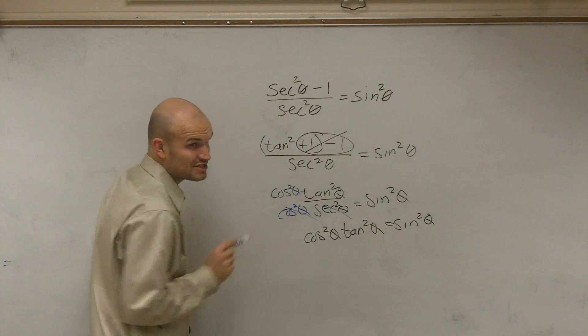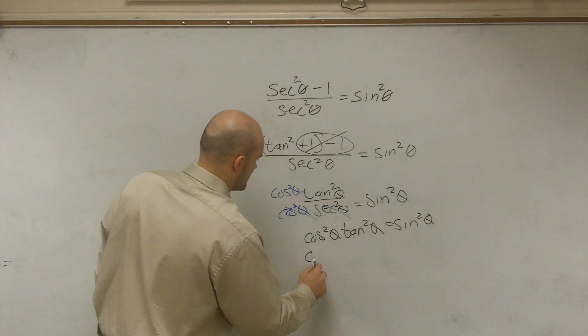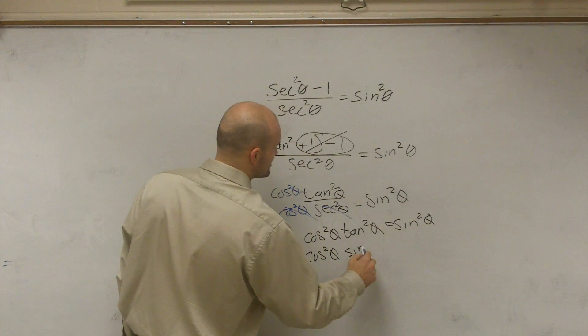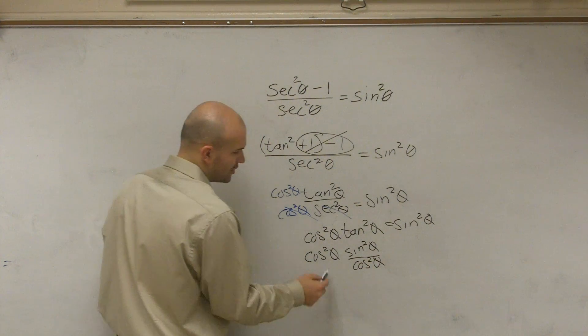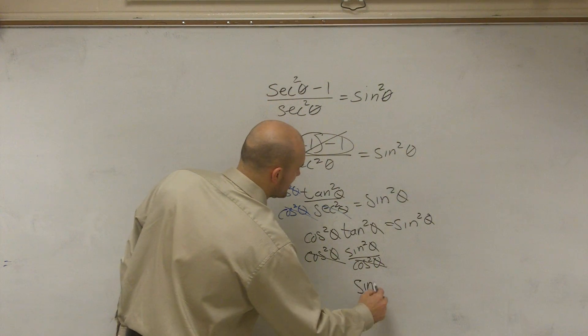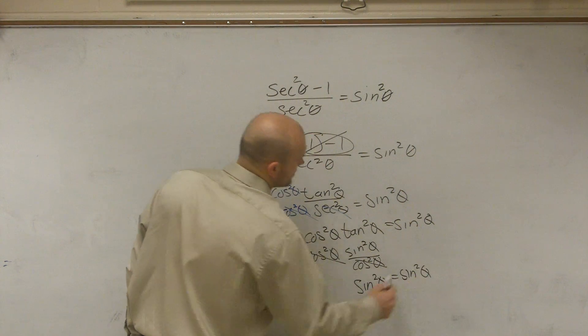And remember, tangent is what? Sine squared over cosine squared. So if I converted the tangent to sine squared of theta over cosine squared of theta, you notice that my cosines divide into 1. Therefore, I'm finally left with sine squared of theta equals sine squared of theta.